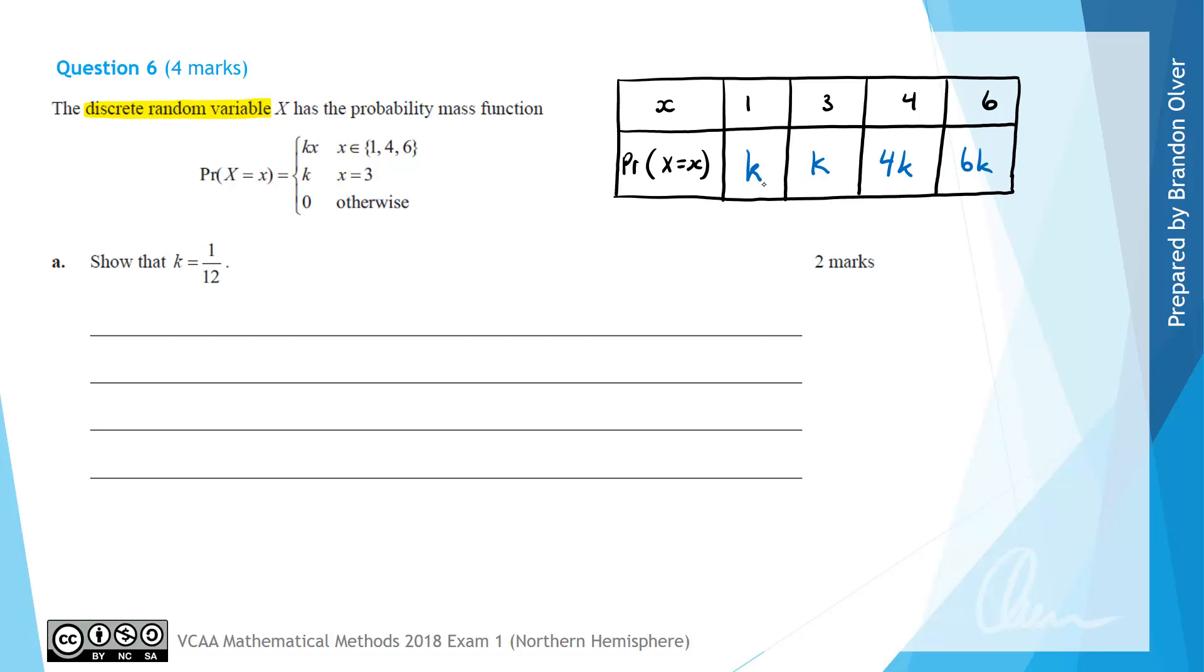So now that we have this table, we know that the sum of all of these probabilities must equal 1. So therefore, k plus k plus 4k plus 6k must equal 1. And if you add that up, you get 12k equals 1. Therefore, we find k equals 1 divided by 12, which is what we were asked to show.